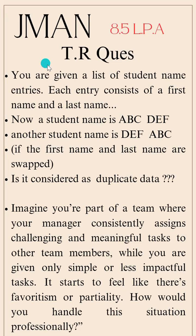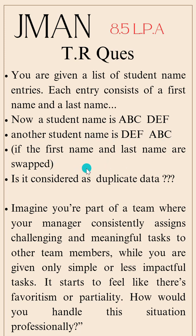Hello everyone, today we are going to see the technical questions asked in JMan, which is for 8.5 LPA. You are given a list of student name entries; each entry consists of a first name and last name. Now, if a student name is 'ABC DEF' and another entry is 'DEF ABC' — where the first name and last name are swapped — is it considered as duplicate data? This is a technical interview question asked in JMan on-campus placement. If you know the answer, please put it in the comment section, and I will make another video on this answer.